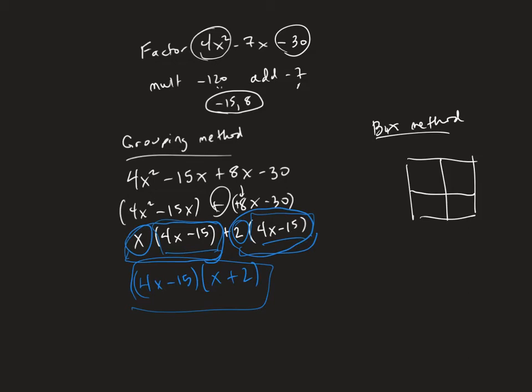Then the first term, the square term, goes in the upper left. The constant term goes in the bottom right. And then the -15 and the 8, the two numbers we came up with, go in the other two boxes in either order with an x next to them.